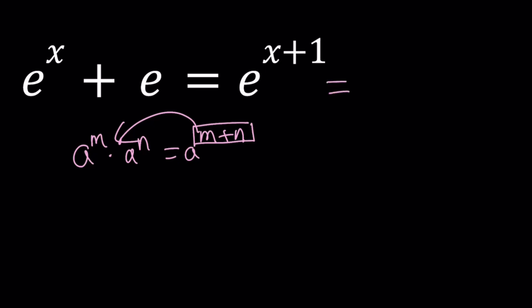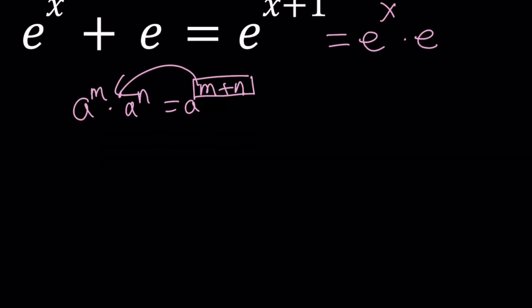E to the power x plus 1 can be split up into e to the power x times e to the power 1, which you can write as just e, which is Euler's number. Again, it's about 2.7, that's all I know. What are we going to do with this equation then?